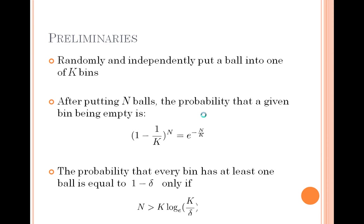Suppose we randomly and independently put a ball into one of k bins, where k is a large number. After putting n balls, we can know the probability that a given bin is empty, and the condition under which the probability that every bin has at least one ball is equal to 1 minus delta.